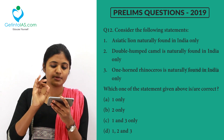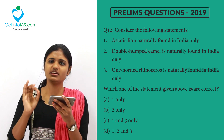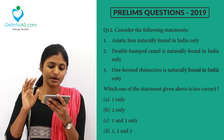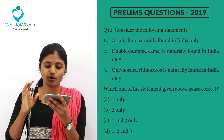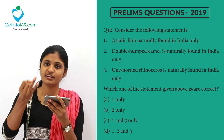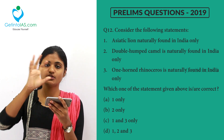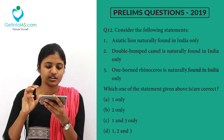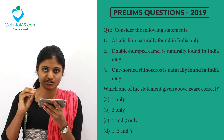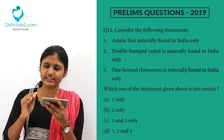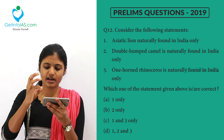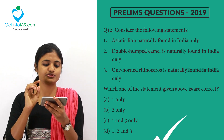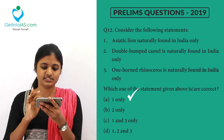Regarding the double-humped camel — is it naturally found in India only? No. The double-humped camel is found in Afghanistan, Mongolia, and even in China — most of the Central Asian region. As for the one-horned rhinoceros — is it found only in India? No. It is found in Nepal, Bhutan, and even in Pakistan. So option A — one only — is the correct answer.